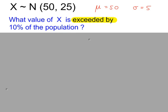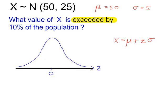What value of x is exceeded by 10% of the population? So this time, you will shade 10% to the right of your line. So here's my line here. It has to be on this side, because I'm going to shade exactly 10% to the right of that line.